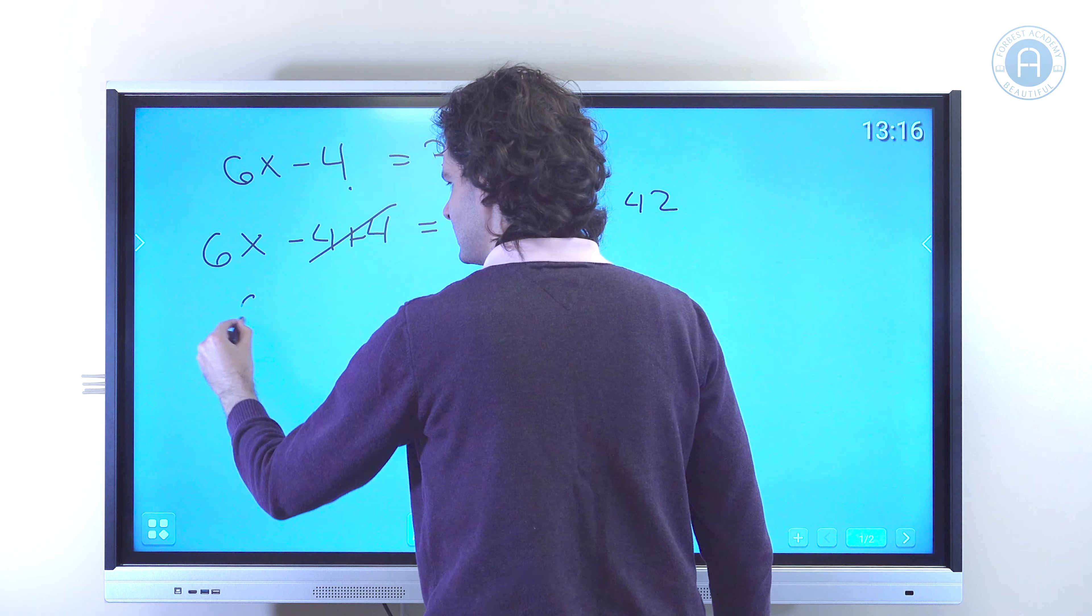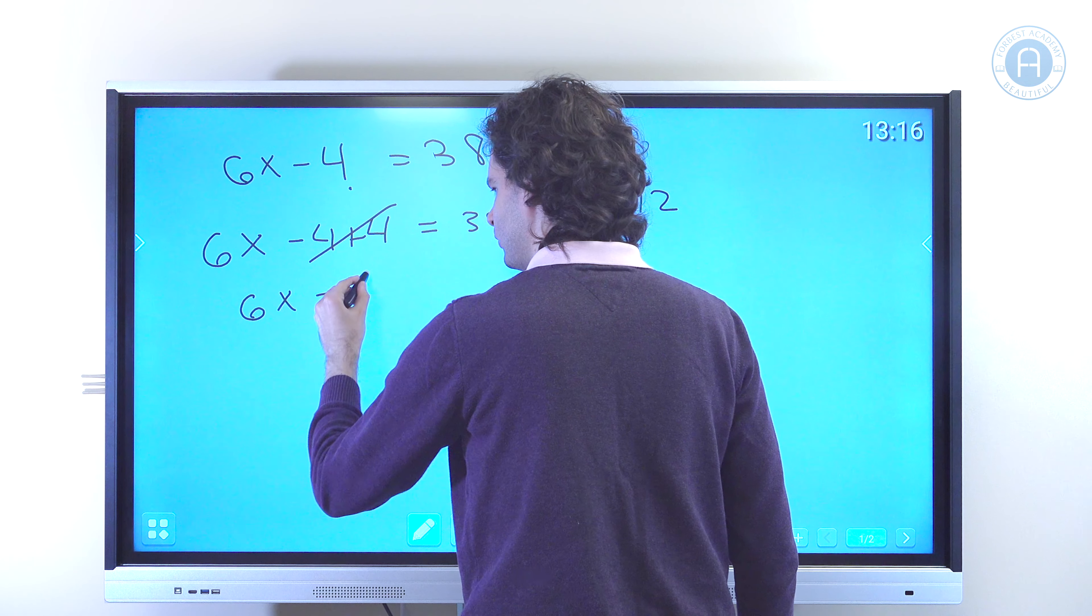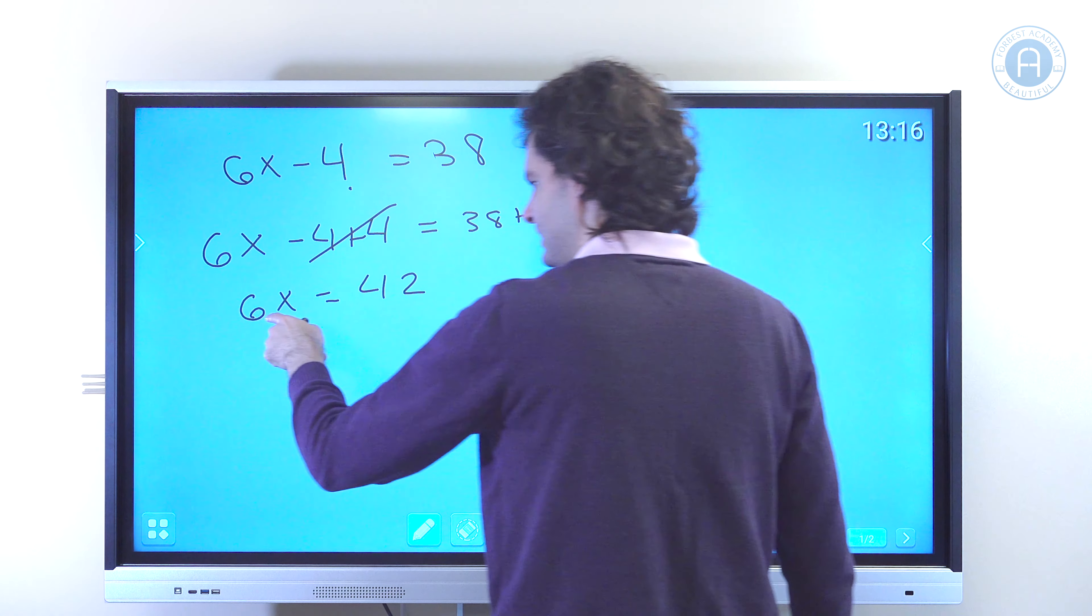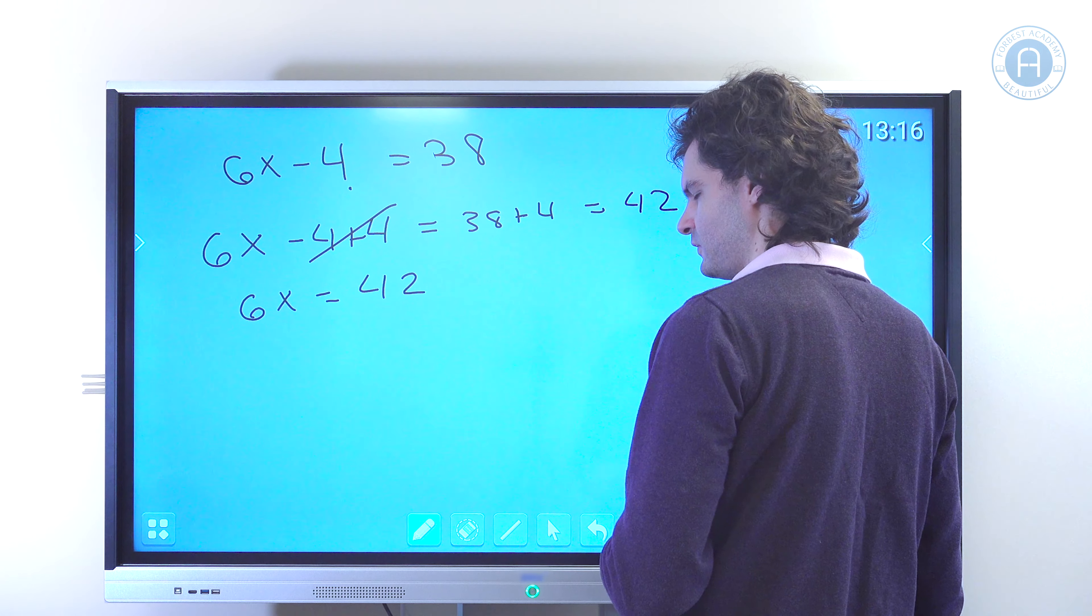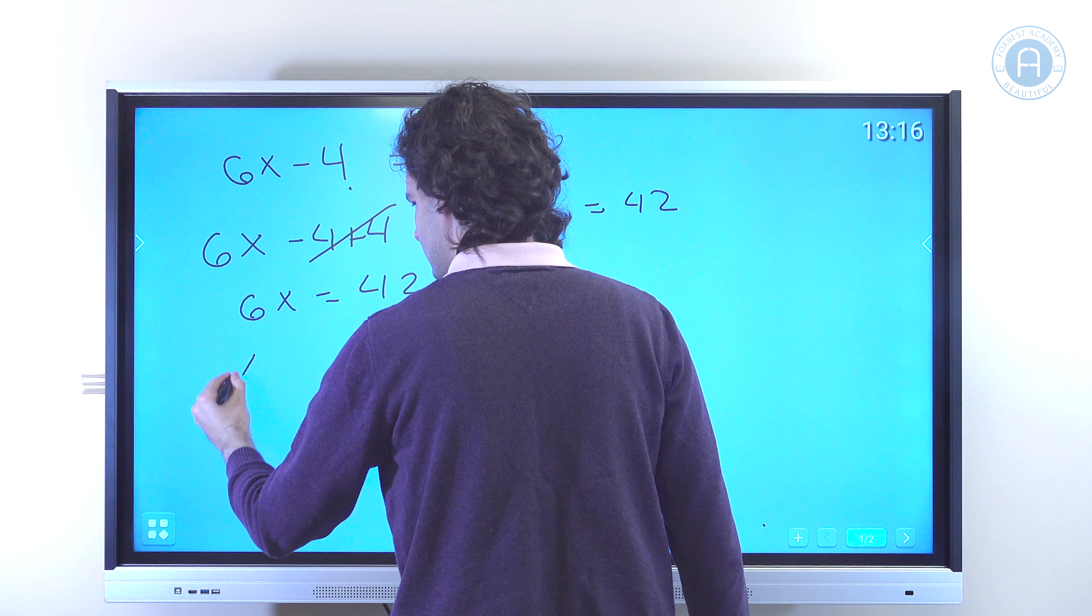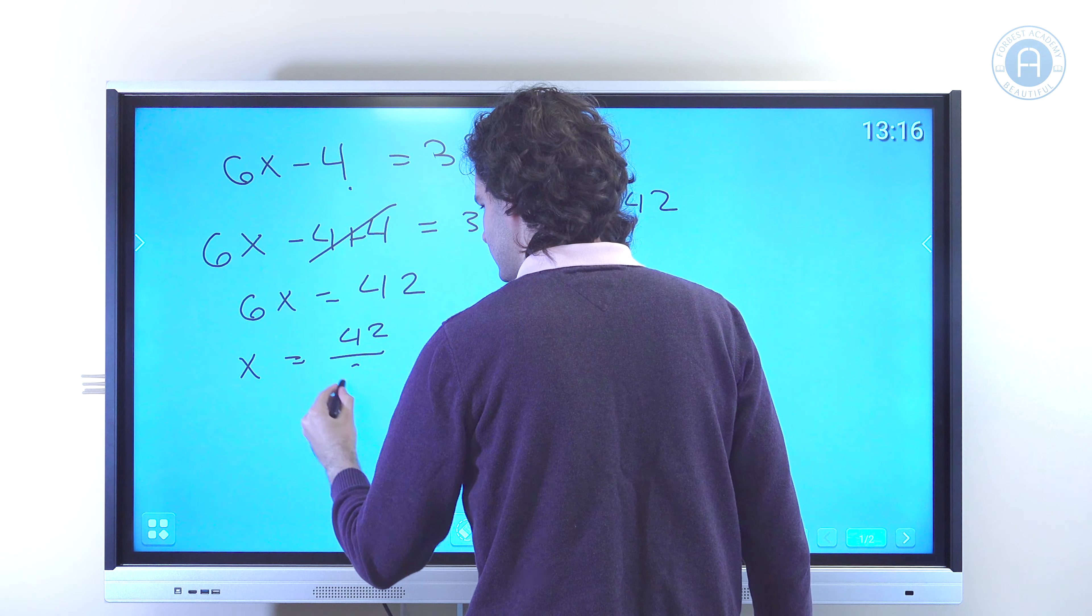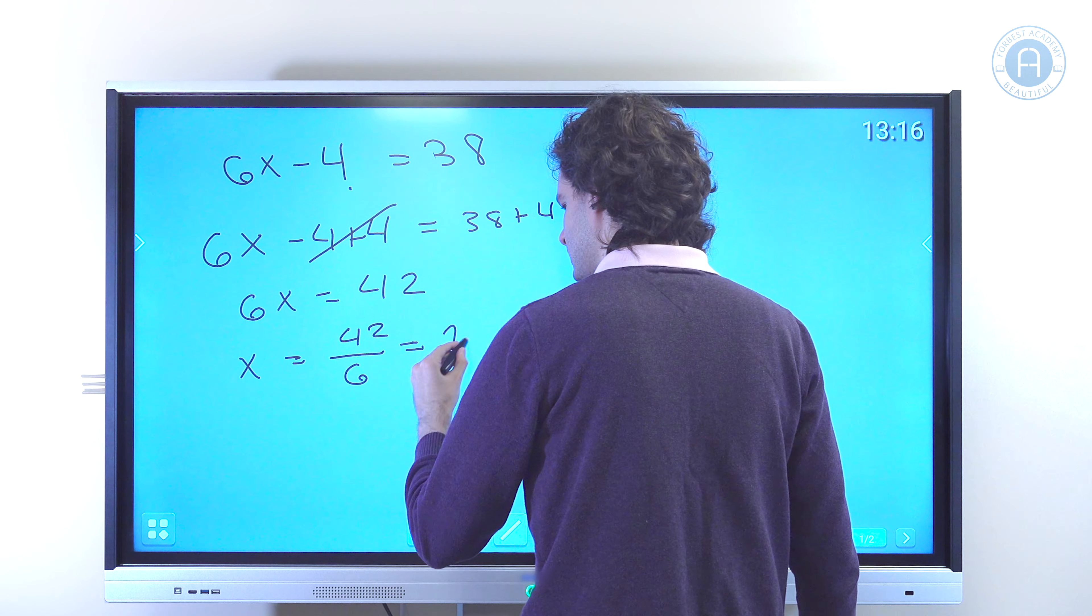And so we have 6x equals 42. So I can divide by 6 both sides of the equation. And that will give me 42 divided by 6, which is 7.